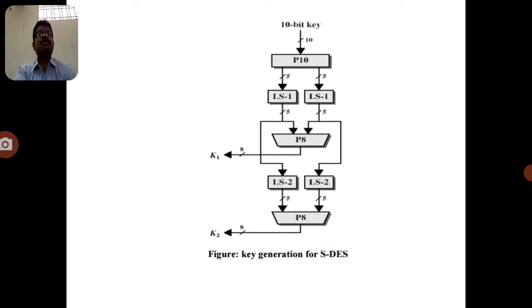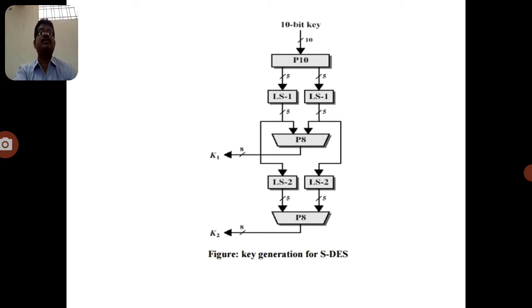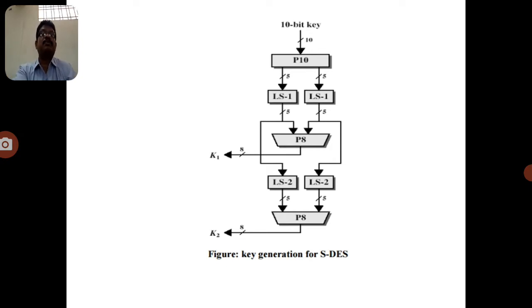In the substitution technique, each element in the plain text is mapped to another element — that means we replace that element. Here, one alphabet is represented as an element. That is the substitution technique.